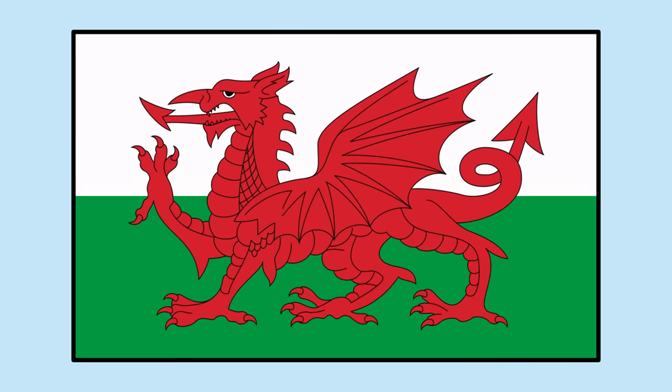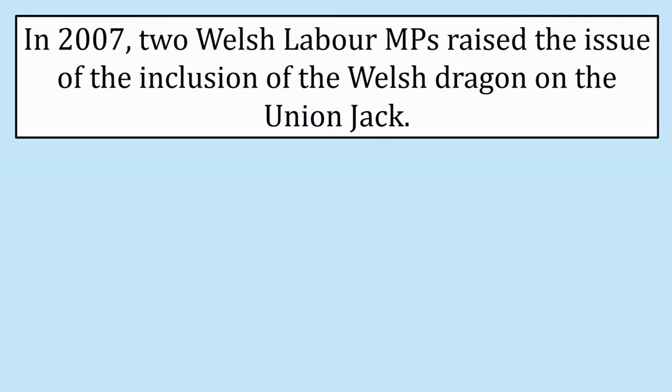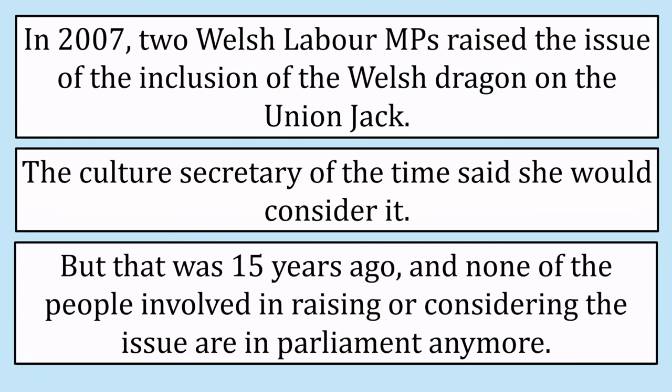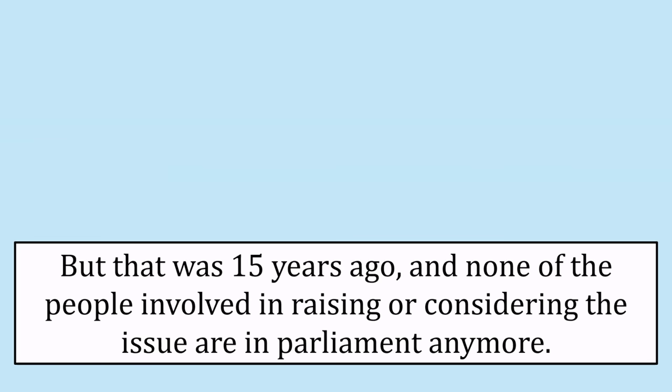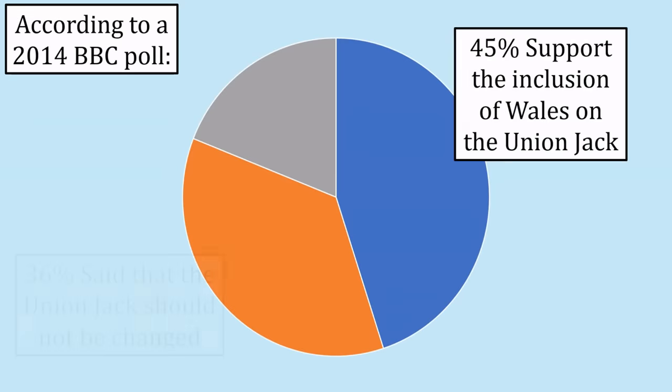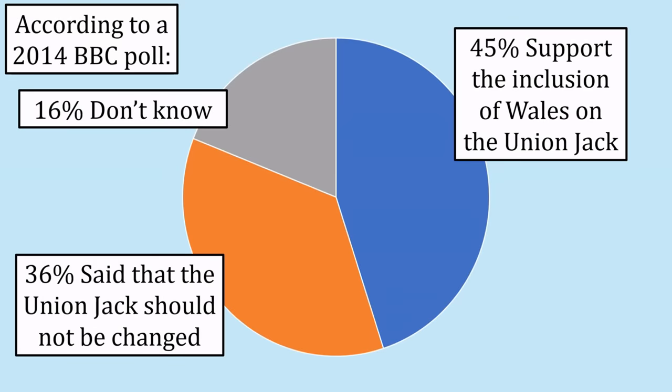Finally, in 1959, the modern flag of Wales was officially adopted. The Welsh would have their own representation for the first time in over 350 years. After this, calls for inclusion on the Union Jack essentially stopped completely. The petitions had been about receiving representation in their own country, and now the Welsh had it. There wasn't really much of an appetite anymore to be included on the Union Jack, and that continues to this day. In fact, many Welsh people have said they don't even want to be on the flag.